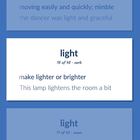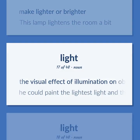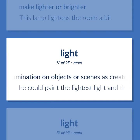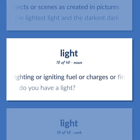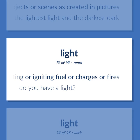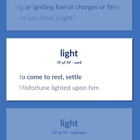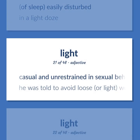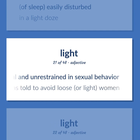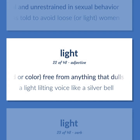Make lighter or brighter — this lamp lightens the room a bit. The visual effect of illumination on objects or scenes as created in pictures — he could paint the lightest light and the darkest dark. A device for lighting or igniting fuel or charges or fires — do you have a light? To come to rest; settle — misfortune lighted upon him. Of sleep: easily disturbed — in a light doze. Casual and unrestrained in sexual behavior — he was told to avoid loose or light women. Of sound or color: free from anything that dulls or dims — a light, lilting voice like a silver bell.